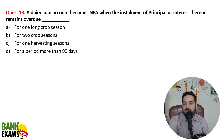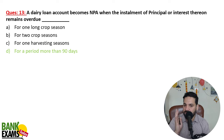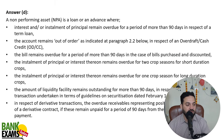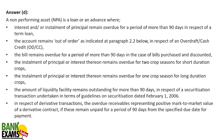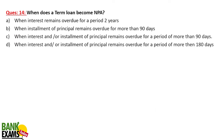A dairy account becomes NPA when the installment of principal remains overdue for more than 90 days. The harvesting season concept is not valid here — that is for agriculture. NPA definition: interest due on a term loan for more than 90 days; the out-of-order concept for CC/OD; a bill remaining overdue for more than 90 days. When a term loan becomes NPA: when interest or installment is overdue for more than 90 days.